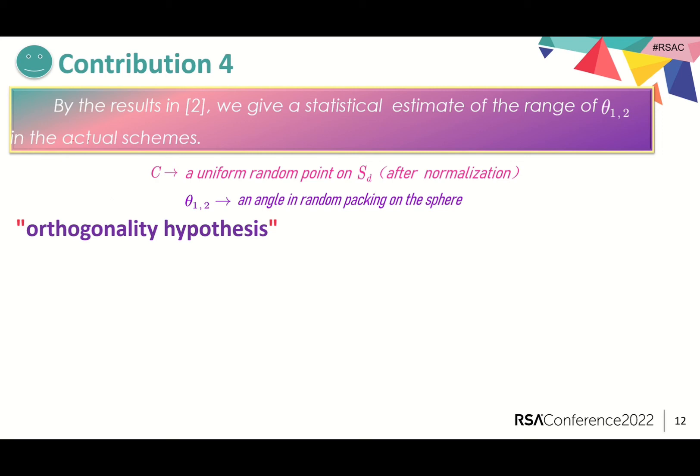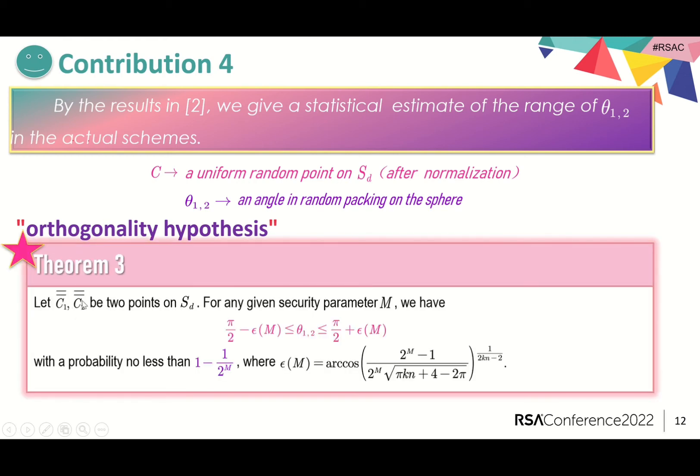Recently, Cai et al. presented a precise formulation and gave the proof of it. By their results, we gave a statistical estimation of the range of theta_{1,2} in the actual schemes as can be seen in Theorem 3 of our paper.